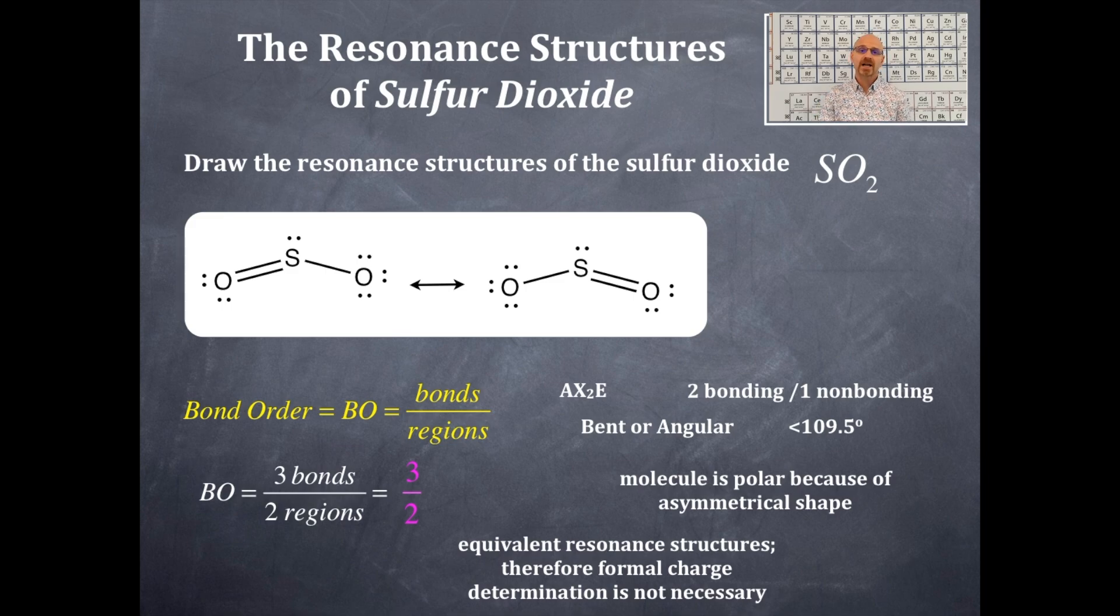So sulfur dioxide does not have a single bond in it. Sulfur dioxide does not have a double bond in it. In fact, that bond order of three halves lets you know that each bond is 1.5. That is one and a half bond order, if you will.